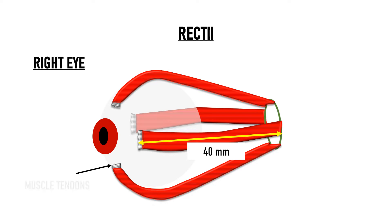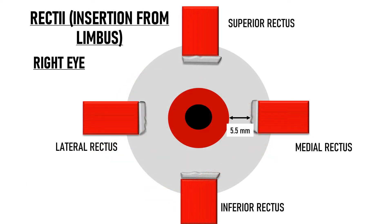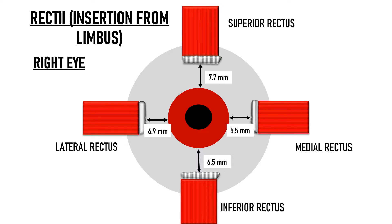Medial rectus inserts 5.5 mm away from the limbus — the junction between the cornea and the sclera. Inferior rectus inserts 6.5 mm away, lateral rectus inserts 6.9 mm away, and superior rectus inserts 7.7 mm away from the limbus. So starting from the medial rectus and going clockwise, the insertions are 5.5, 6.5, 6.9 and 7.7 mm from the limbus.